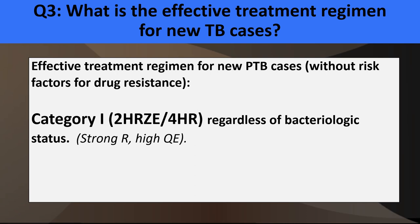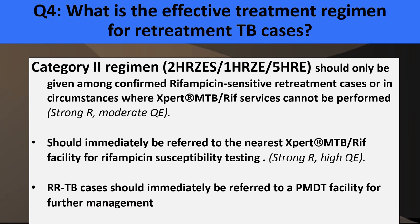What is the effective treatment for new TB cases? Category 1, meaning no risk factors for drug resistance: regimen is 2HRZE and 4HR, regardless of bacteriologic status. For retreatment of TB cases — Category 2 regimen — it should only be given among confirmed rifampicin-sensitive retreatment cases, or in circumstances where Xpert cannot be performed, and should be referred to the nearest Xpert facility. RR-TB cases should immediately be referred to a PMDT facility. Category 2 regimen would be 2HRZES, 1HRZE, 5HRE.